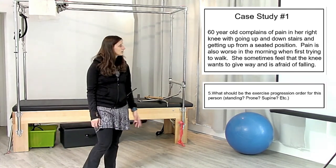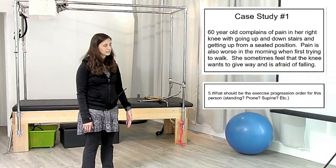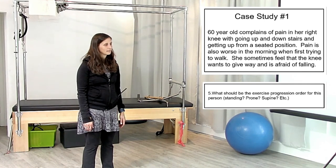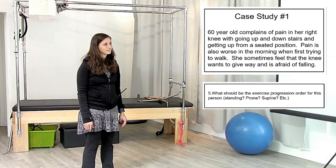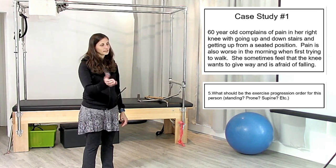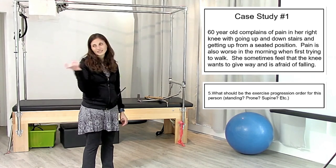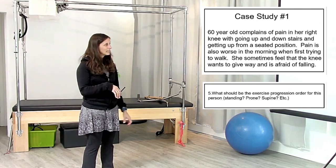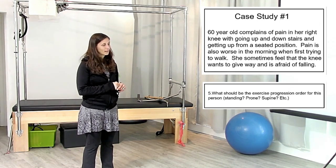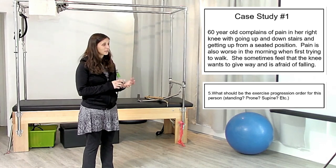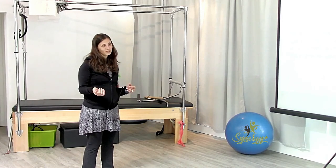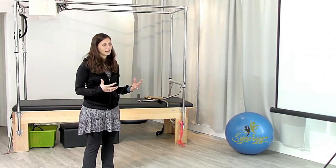For the exercise progression: start with footwork on the reformer, then progress to supported squats and similar exercises. So we go from supine, then side-lying, then up to standing to get more functional again. The chair work is really good for the quad. So the progression might be supine, sitting, side-lying, and standing will be the last — but it's the most functional — so we'd want to get there as much as we could.